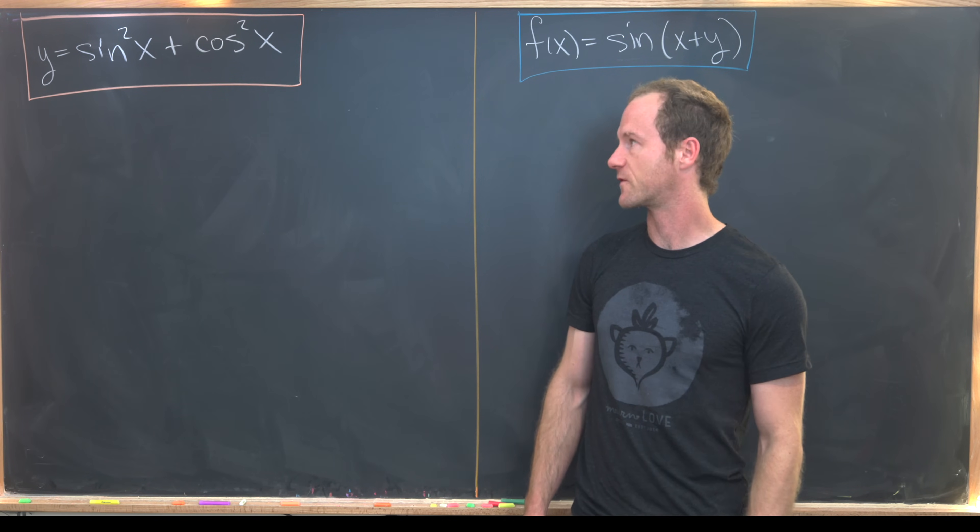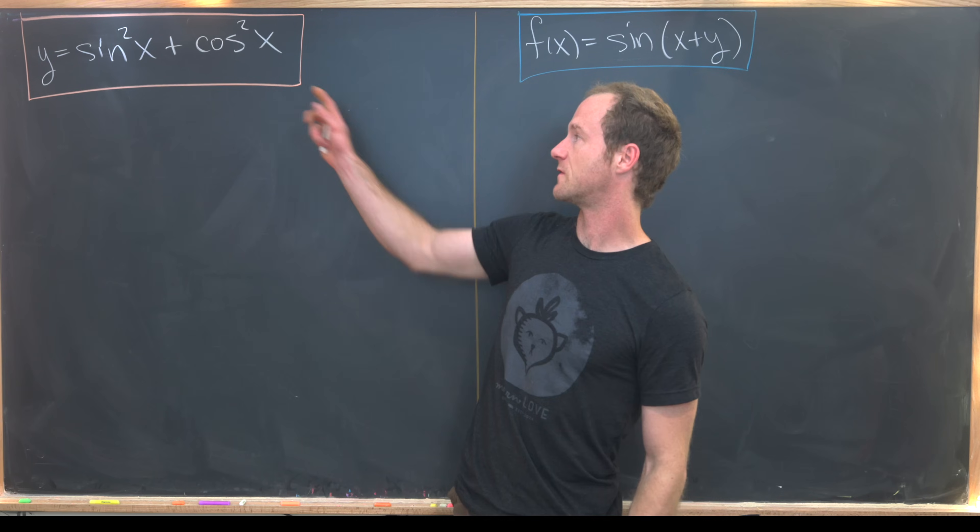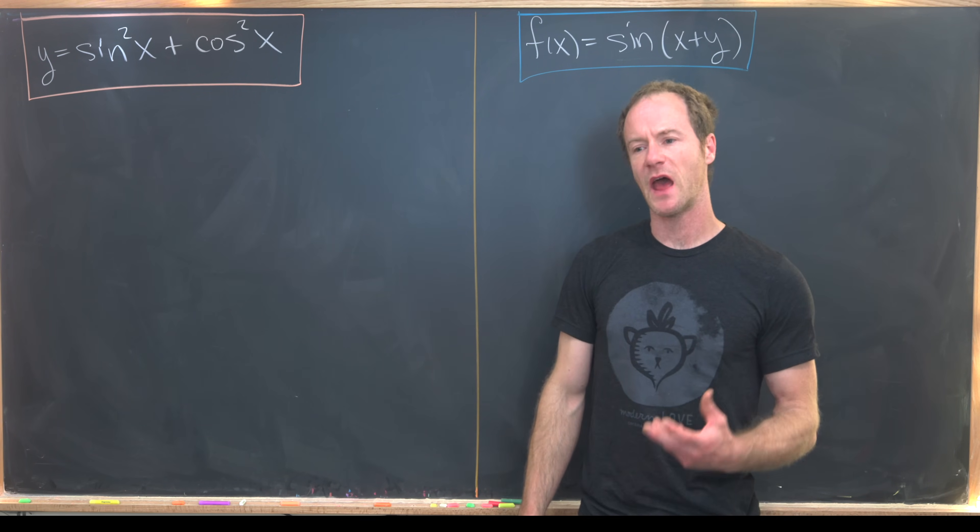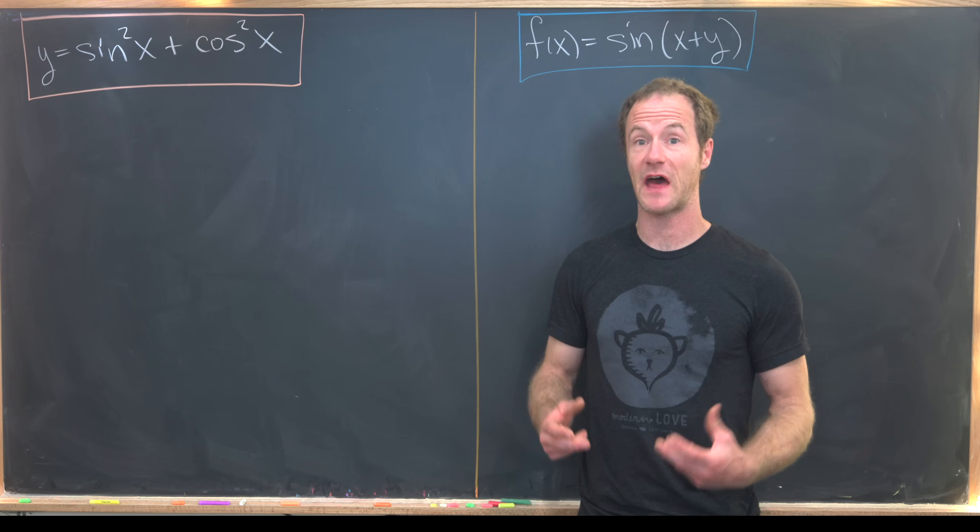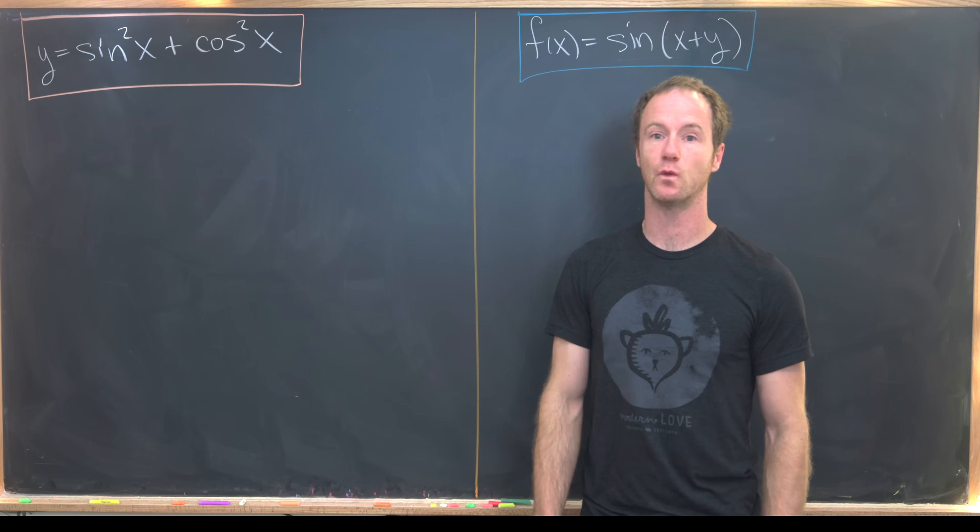Let's look at our first identity. It's going to involve sin²(x) + cos²(x), and of course we know via the Pythagorean identity that should equal one, but I'm setting it equal to y and we're going to think about y as a function of x.